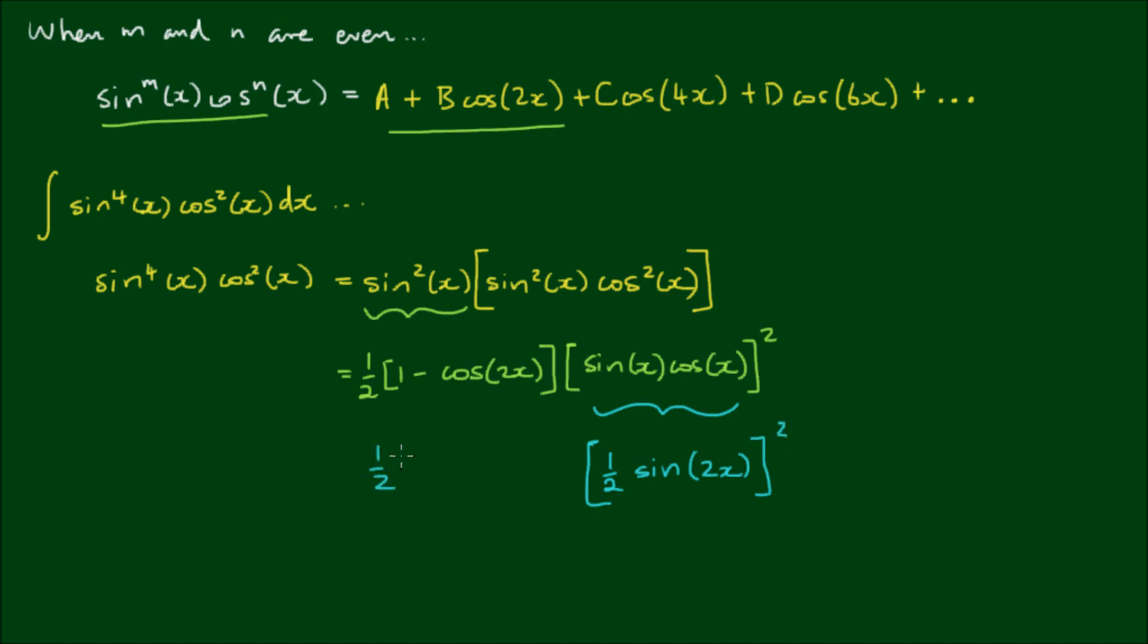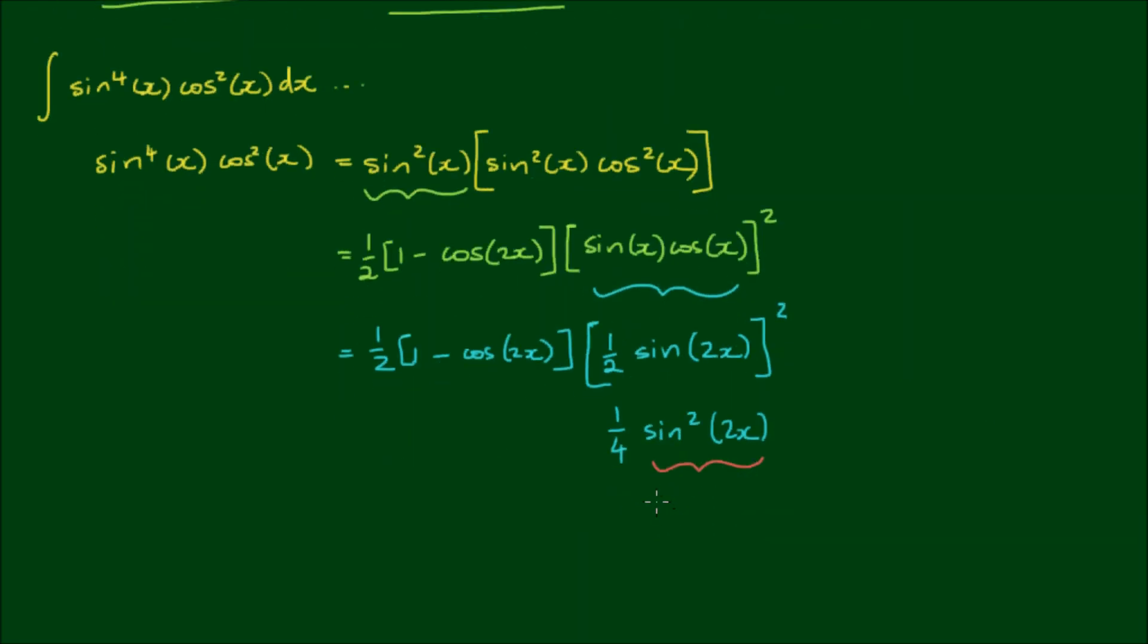So I have 1 half of 1 minus cos of 2x multiplied by 1 half of sin of 2x squared. So now expanding the squared into the brackets, I have 1 quarter by sin squared of 2x. And again, the sin squared of 2x I can use the half angle formula again to express this as 1 half of 1 minus cos of 4x.